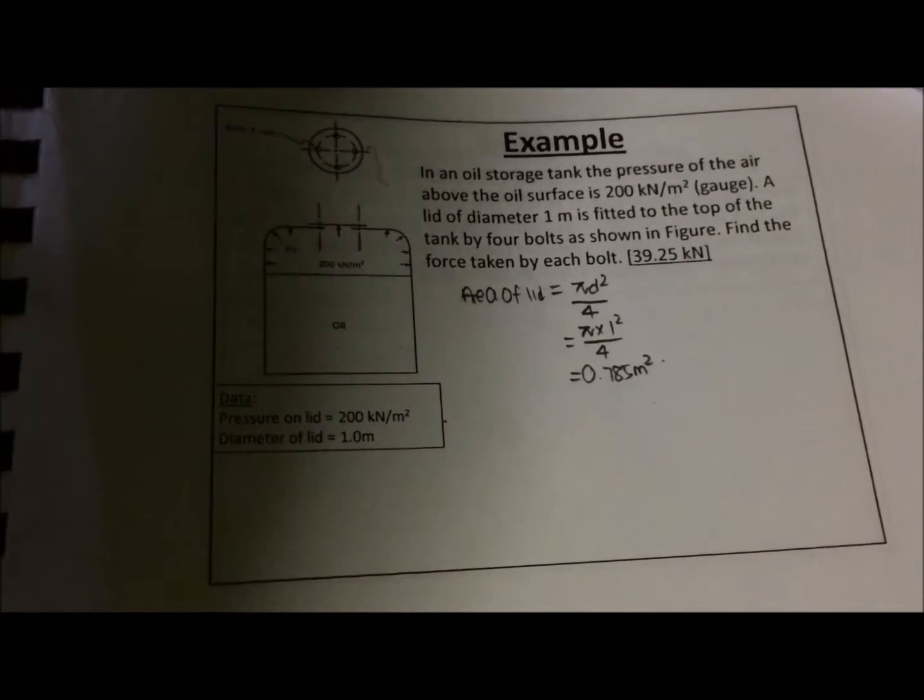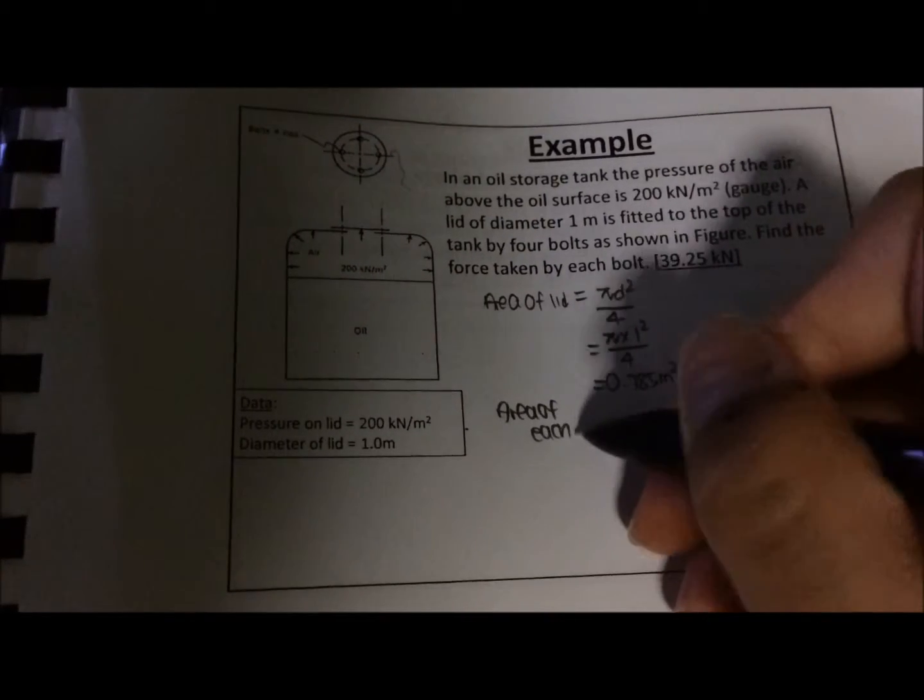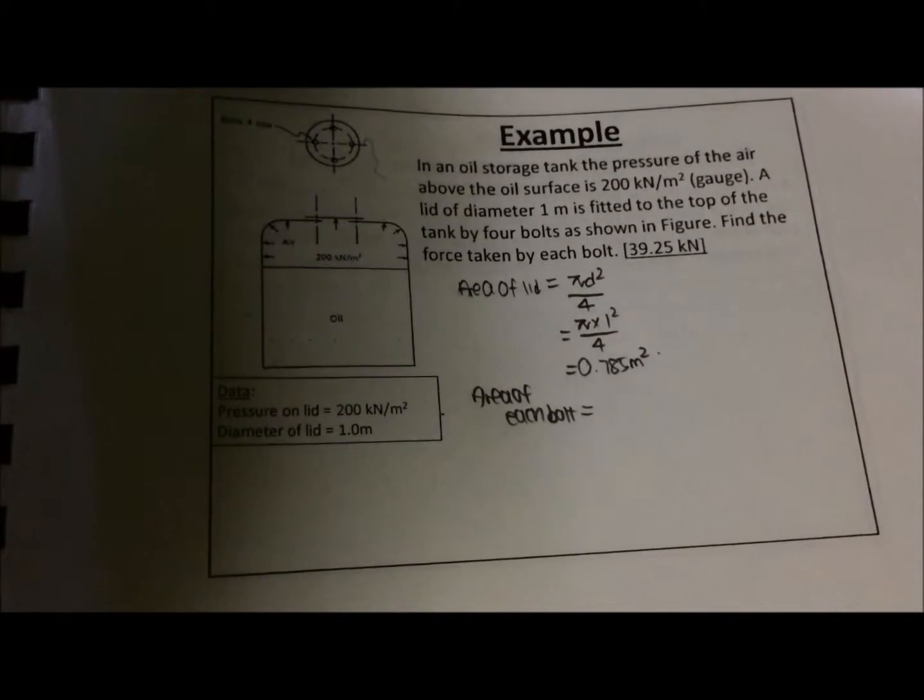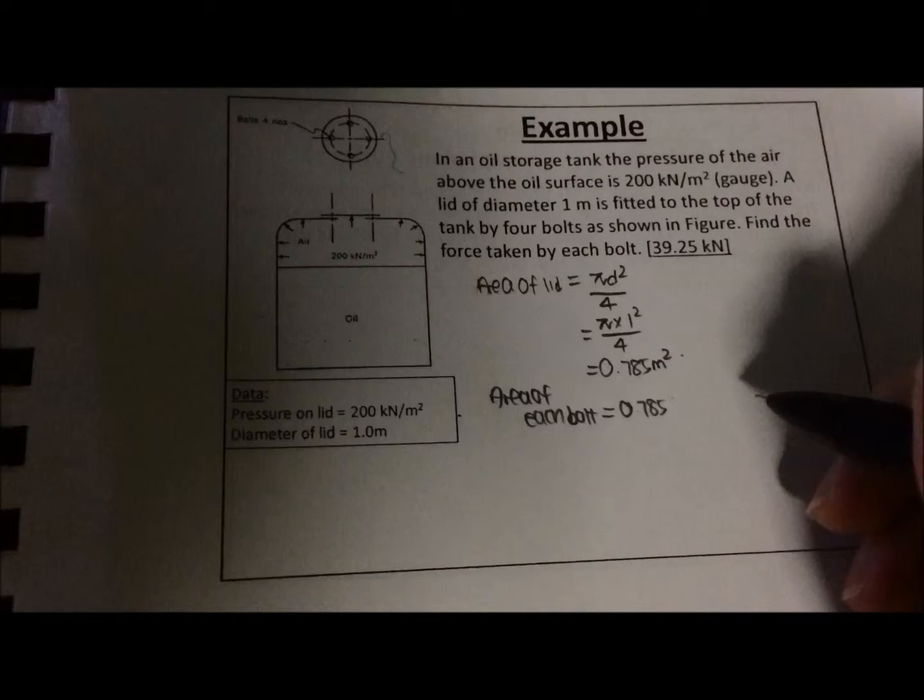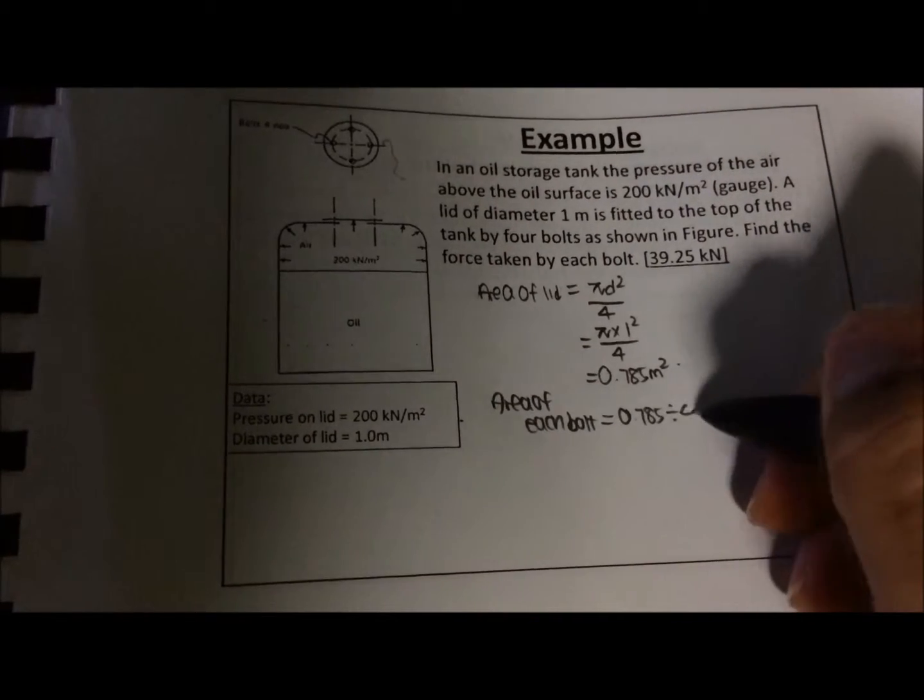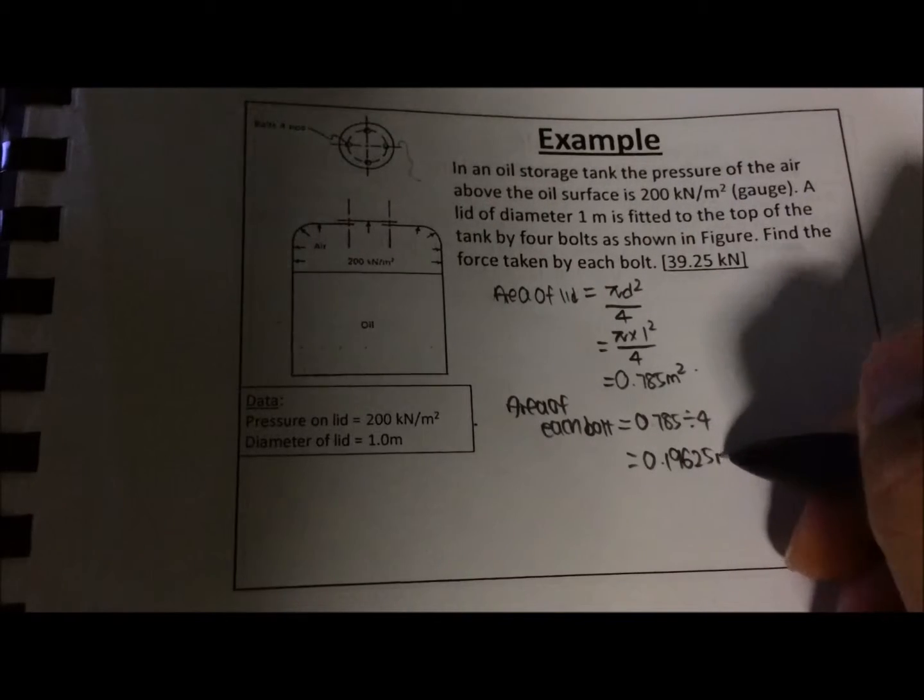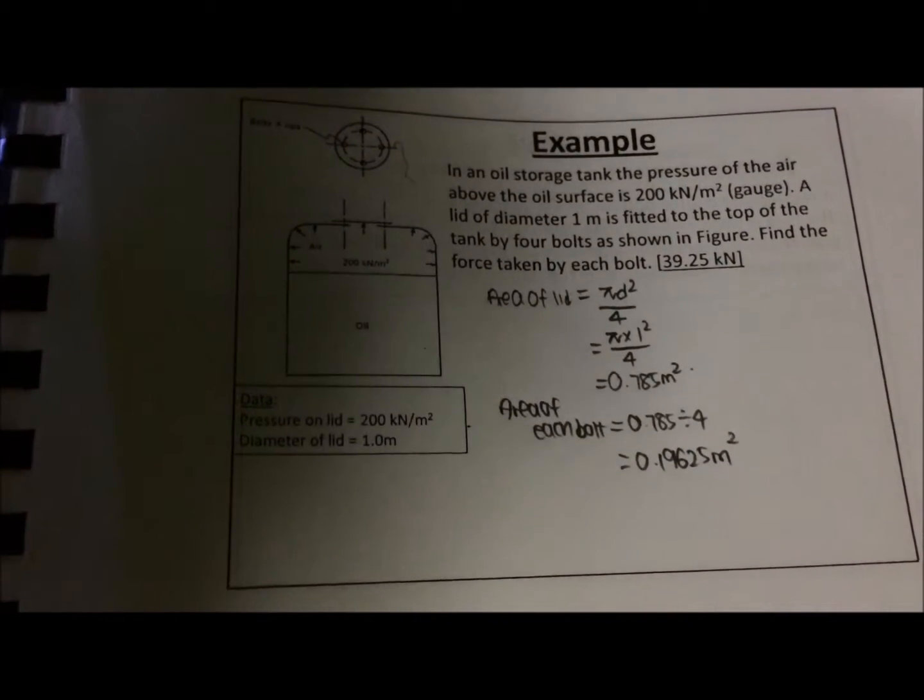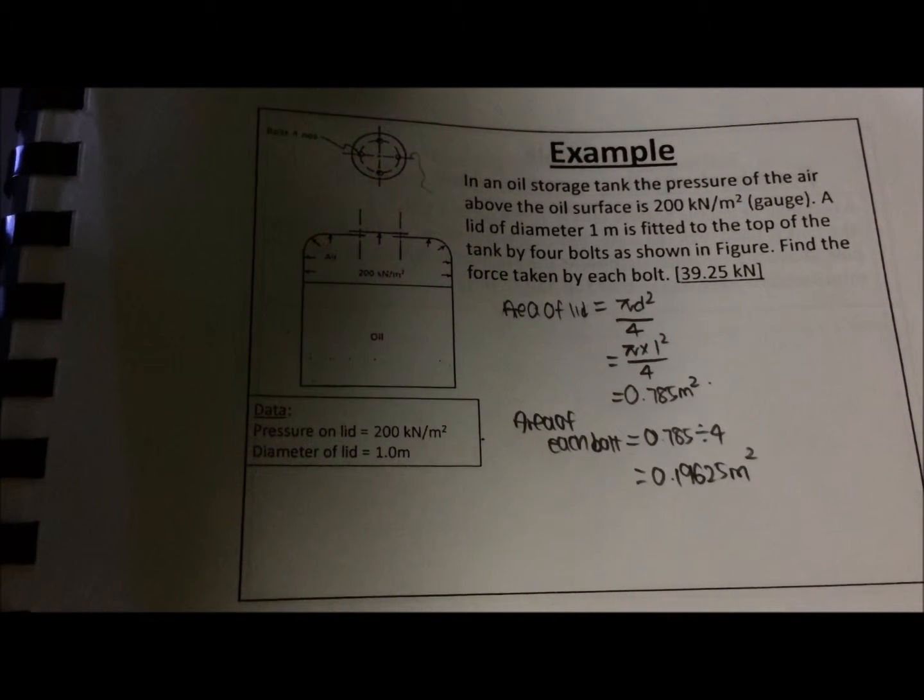So after finding the area of the lid, you have to find the area of each bolt, which is simple. You just get the area of the entire lid, which is 0.785, divided by 4, which is 0.19625. You can put it to five decimal places just to make sure it's accurate enough.